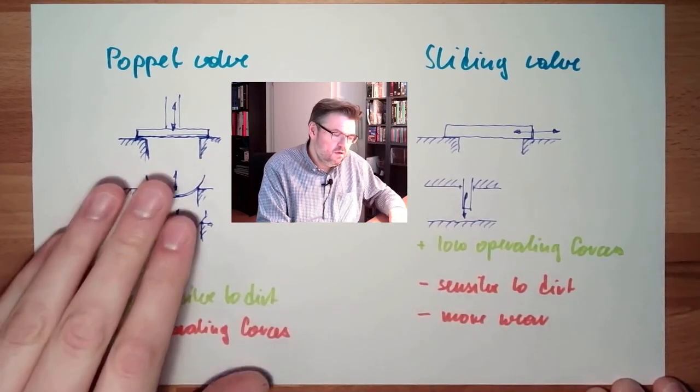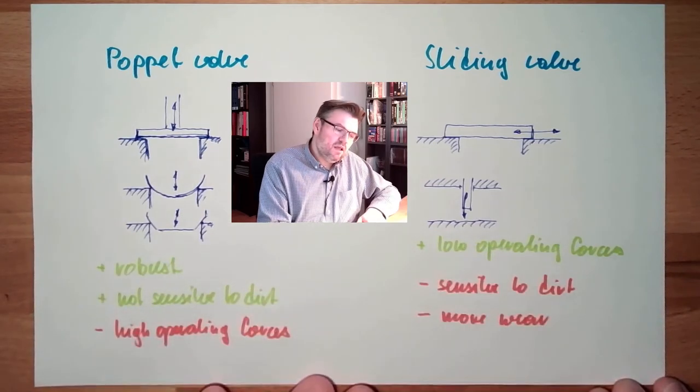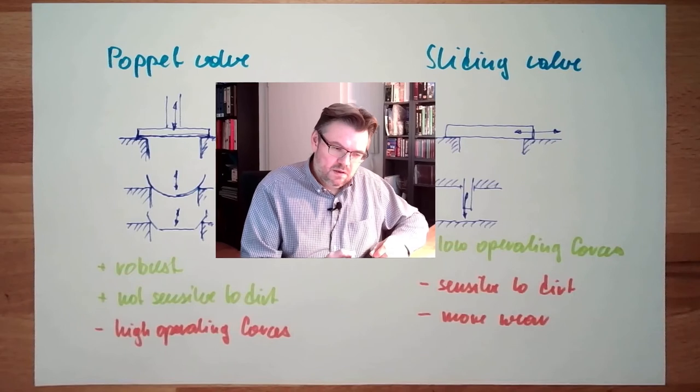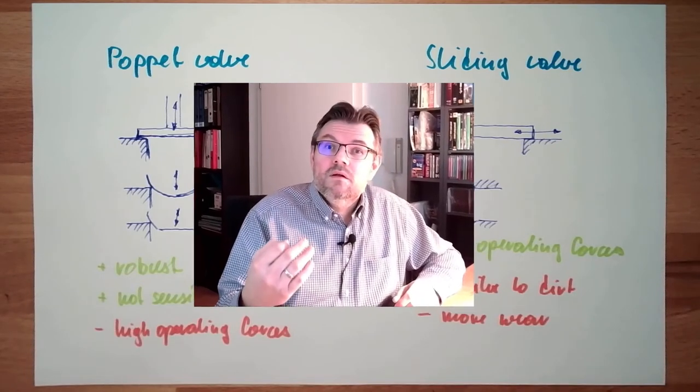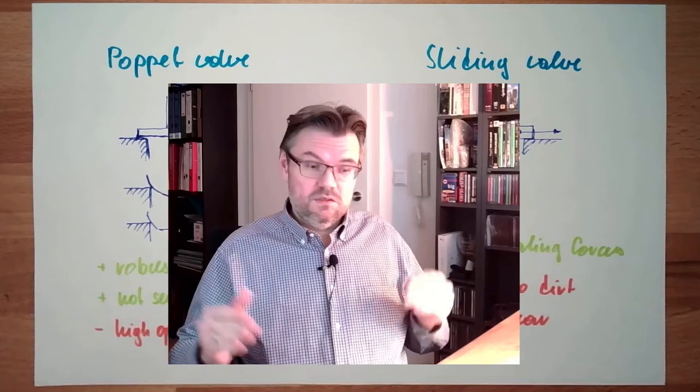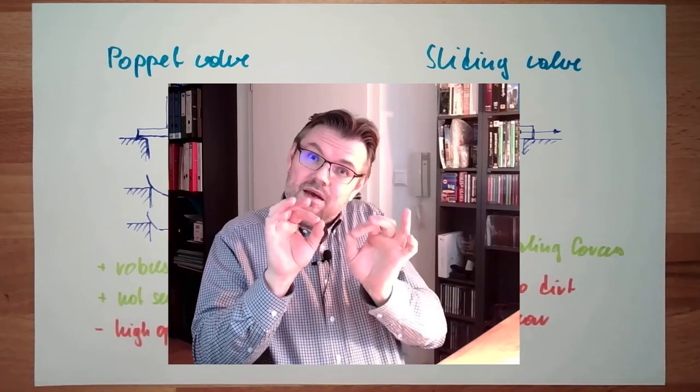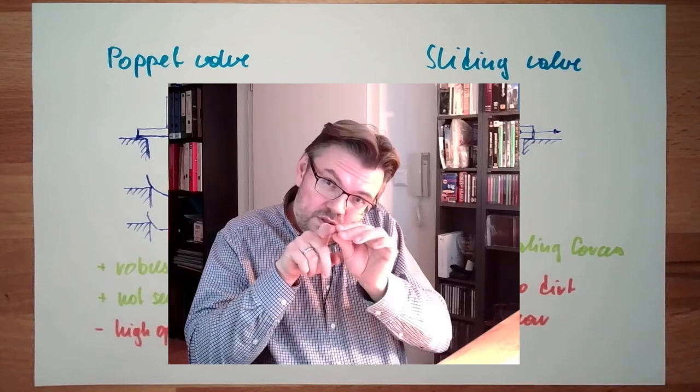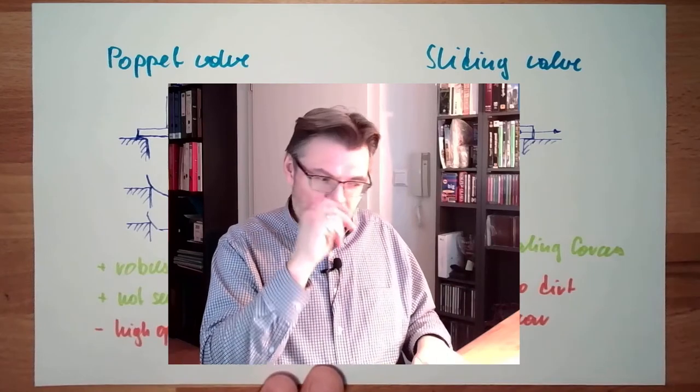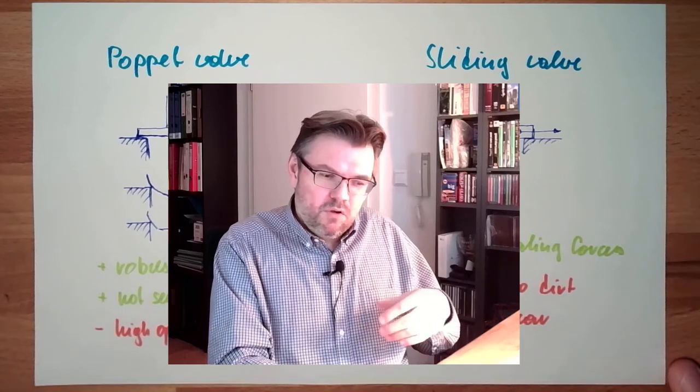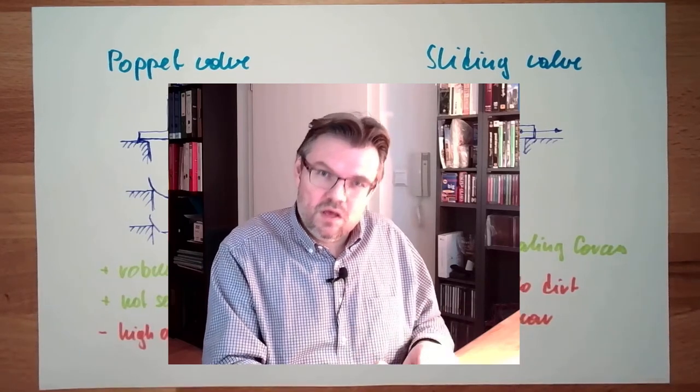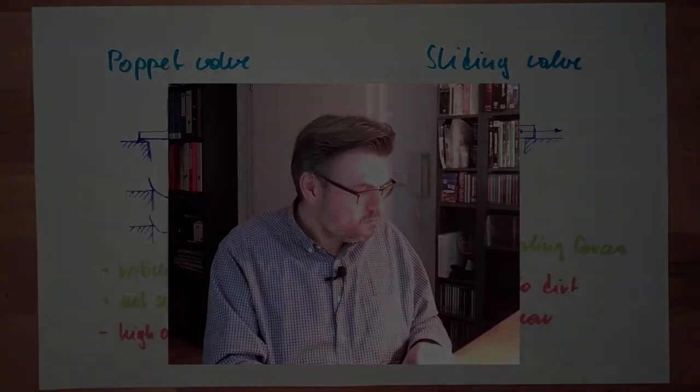These low operating forces here on the sliding valve side are really important. Simply because my control part, I do not want to use a whole power plant just for controlling my things. I want to have it tiny and small and with this tiny and small signal from the control part I want to switch. So the sliding valves are pretty common, even if it's now looking like they have more disadvantages, but they are used, heavily used.